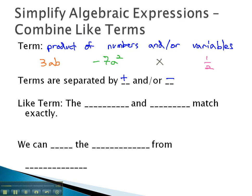I said we wanted to combine like terms. So what exactly is a like term then? Well, a like term is when the variables and the exponents match exactly.